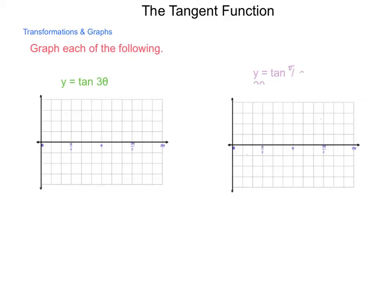So, for the first one, tangent of 3 theta. Let's work out our period. The period of this is equal to pi divided by b.